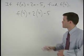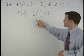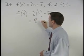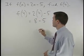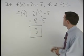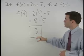Now all we have to do is simplify on the right side. 2 times 4 is 8, so we have 8 minus 5, which is 3. So f of 4 is 3.